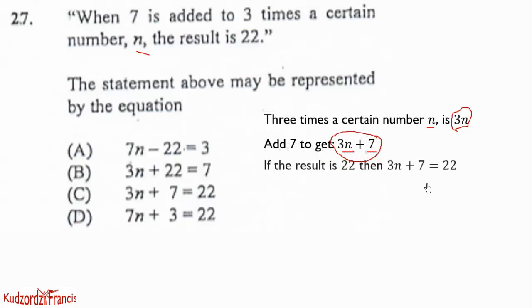When 7 is added to 3 times a certain number N, the result is 22. The statement above may be represented by the equation. So we know 3 times a certain number N will be 3N. Now we are told that 7 is added to 3 times the number, so we will have 3N plus 7. Now the next thing is that the result is 22. So this is the resulting expression that we add 7. So it must be equal to 22. Therefore, the correct answer will be 3N plus 7 equals 22, option C.